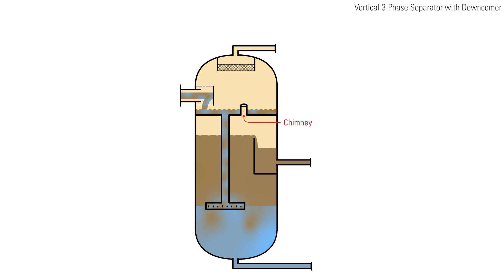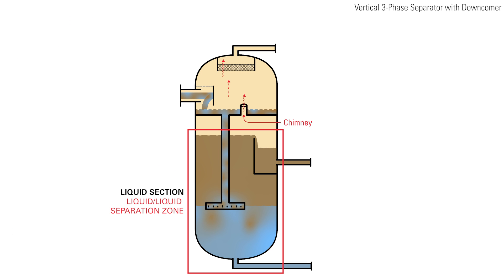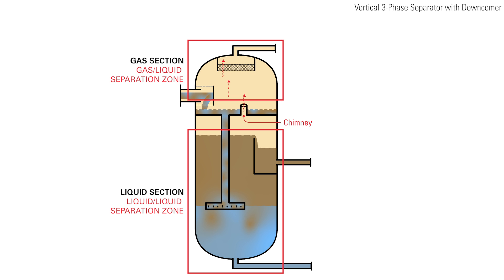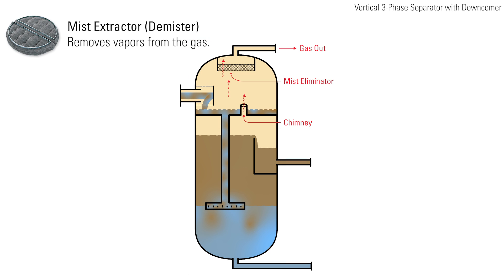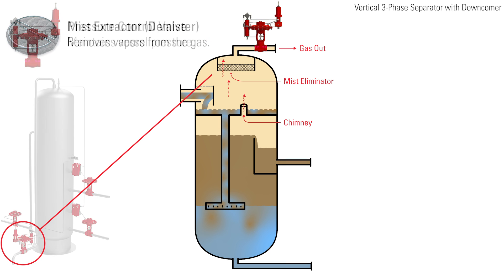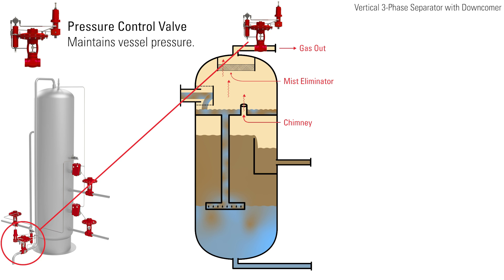A chimney equalizes gas pressure between the lower section of the vessel — the liquid-liquid separation zone — and the gas section, the gas-liquid separation zone. The gas exits through a mist extractor to a back pressure control valve, which maintains constant vessel pressure.